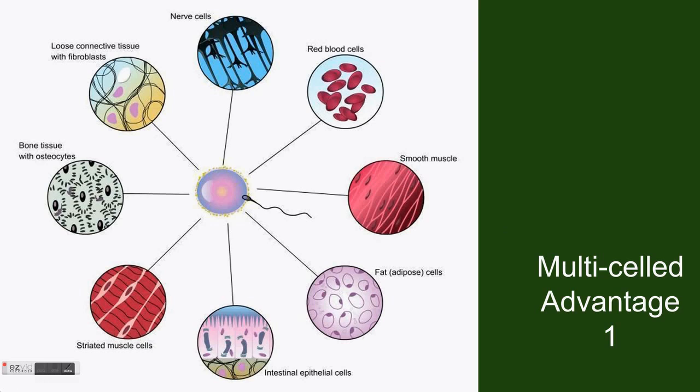The first and primary advantage of multi-celled organisms is the fact that multi-celled organisms contain more than one cell, and each cell in their bodies is specialized to complete a different task. For example, humans contain muscle cells, red blood cells, bone cells, nerve cells, and about 200 other types of cells.